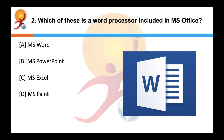Which of these is a word processor included in MS Office? The correct answer is A — Microsoft Word is a word processor which is included in Microsoft Office. The first version of Word was released in 1983, and it was for the MS-DOS operating system.